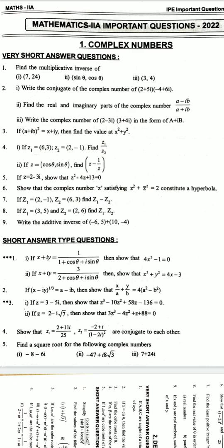If z equals cosine theta sine theta, find z minus 1 by z. Fifth: if z equals 2 minus 3i, show that z square minus 4z plus 13 equals 0. Sixth: show that the complex numbers z satisfying z square plus z bar minus 2 equals 2 constitute a hyperbola.